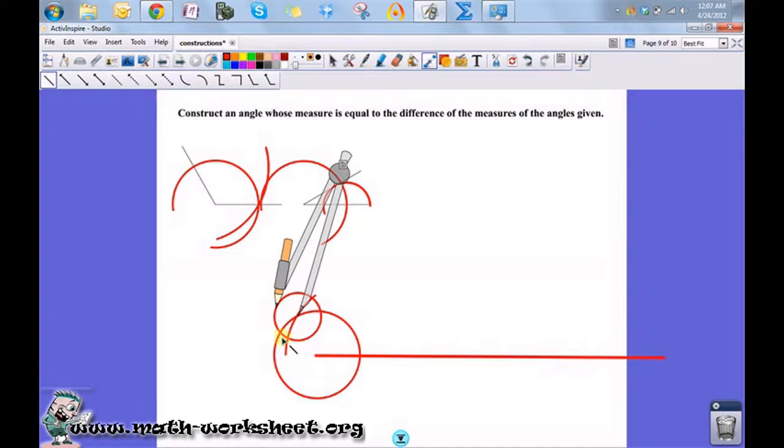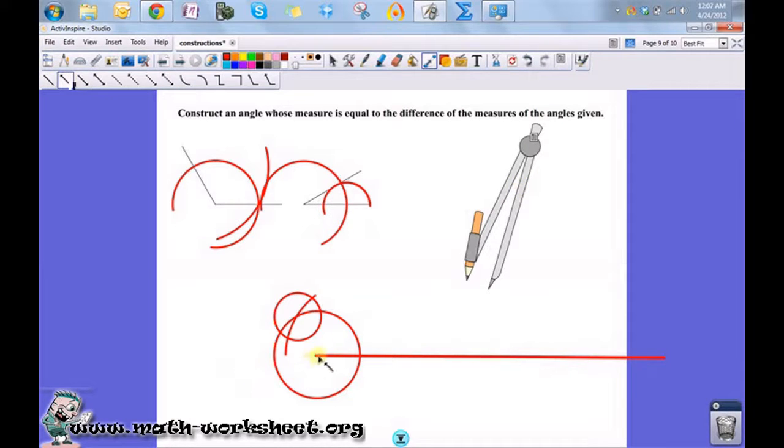If I were to draw a ray from here to there, it would have been the addition of the two angles. If I draw it from here to here, it's the subtraction. So we wanted to do the subtraction, or the difference. This angle has the original angle's measure minus the second angle's measure.